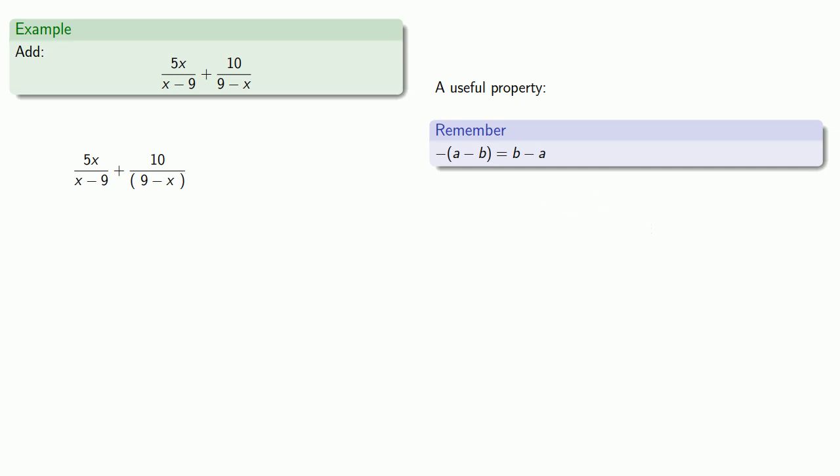So in our fraction, let's multiply numerator and denominator by negative 1. That gives us negative 10 as our numerator and reverses the order of the denominator. And now, they have the same denominator.